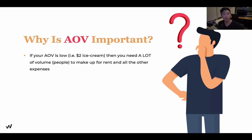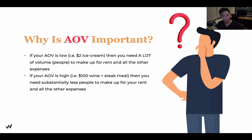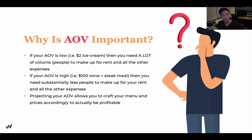However, if it takes 10 to 20 minutes to drive to that specific ice cream location and they only charge $2, that would be a very difficult business to run because there won't be a lot of walk-in traffic. On the flip side, if your AOV is too high — say a $100 wine and steak meal — in a community where people don't typically drive to or can't really afford that meal, that's probably not the best choice for that location. Understanding your AOV allows you to craft your menu accordingly so you can start hitting the profits you're looking for.